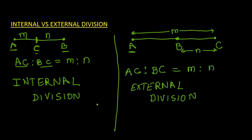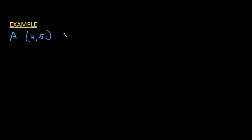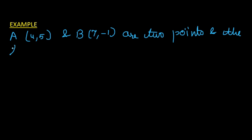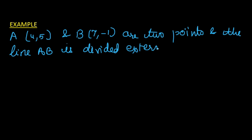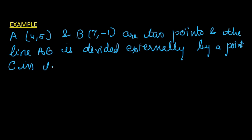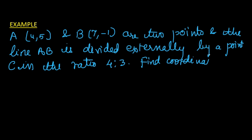Now we will see one example of external division. Let there be point A with coordinates (4, 5) and point B with coordinates (7, -1). The line AB is divided externally by a point C in the ratio 4:3. We have to find the coordinates of C.